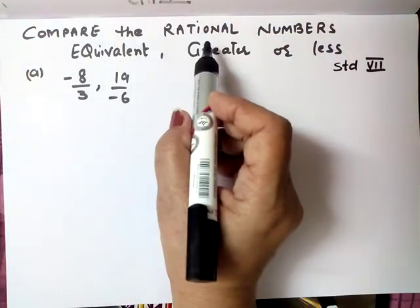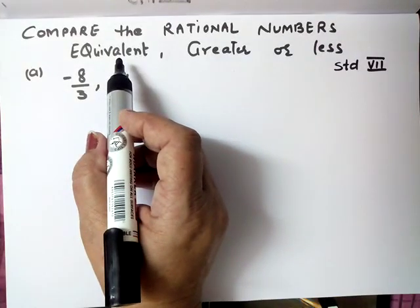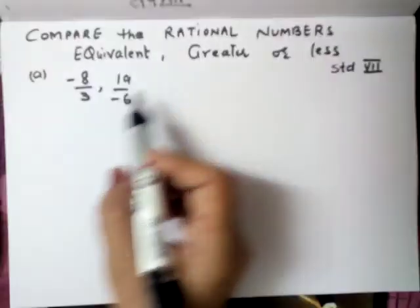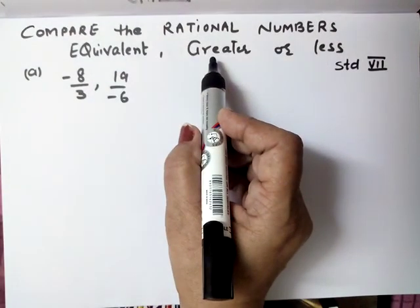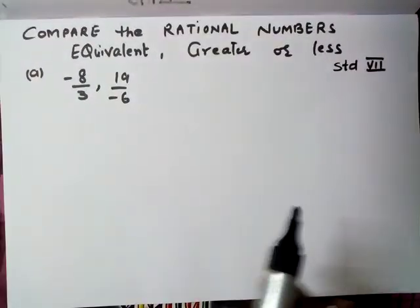Comparison of rational numbers ka matlab hota hai ki if they are equivalent, ya toh dono equal hongi, aur one is greater or one is less. So what is the style first?